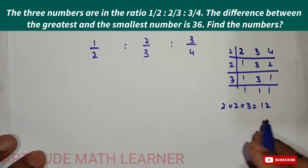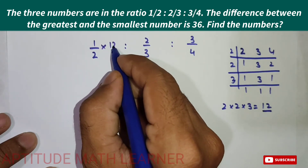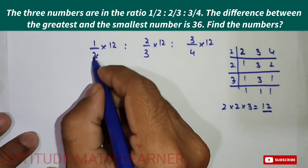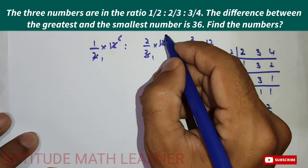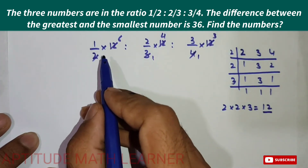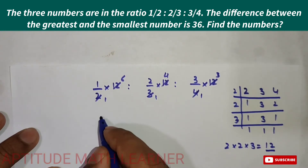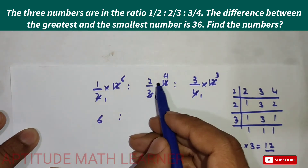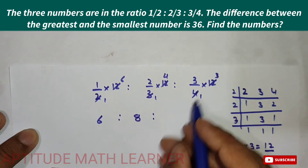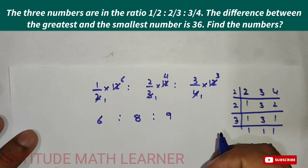We multiply the LCM, 12, by each of the three fractions. 1/2 × 12 = 6, 2/3 × 12 = 8, and 3/4 × 12 = 9. So the simplified ratio of the three numbers is 6 : 8 : 9.